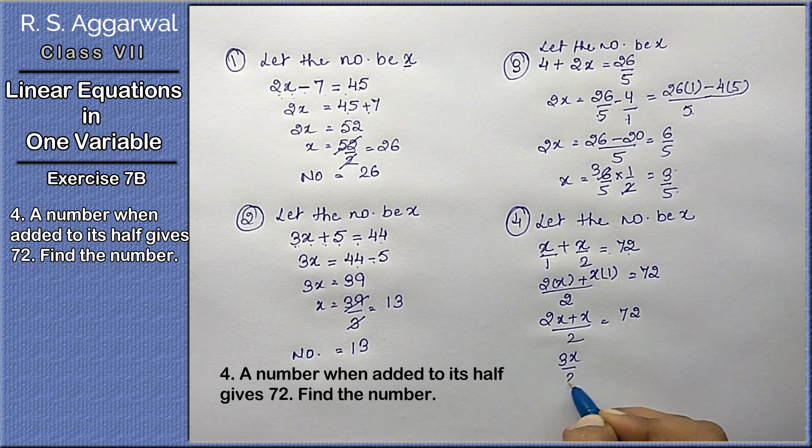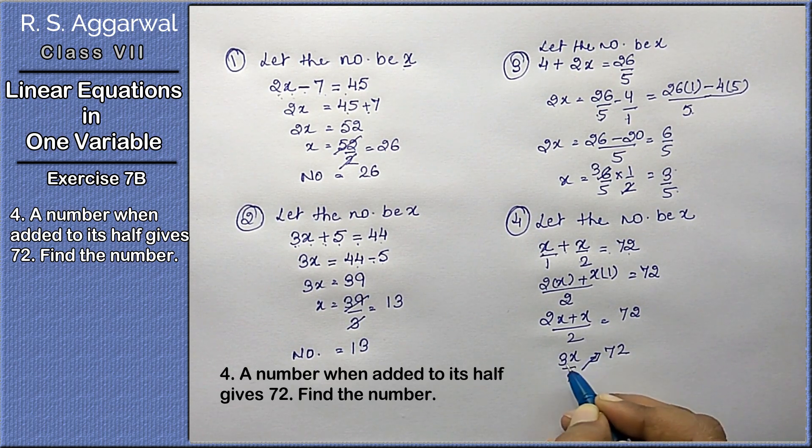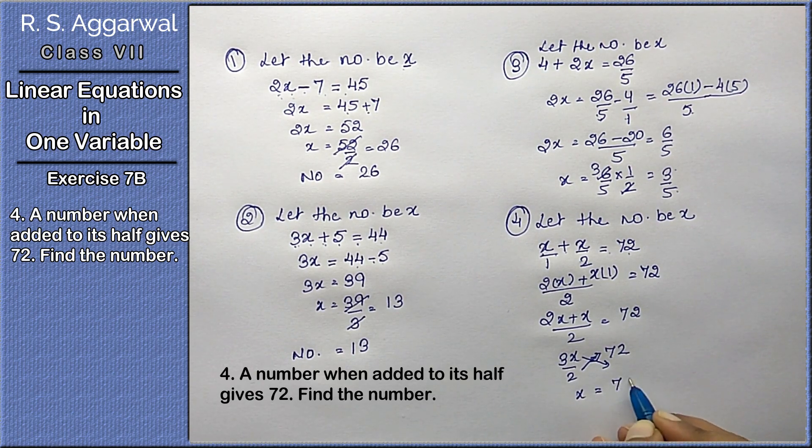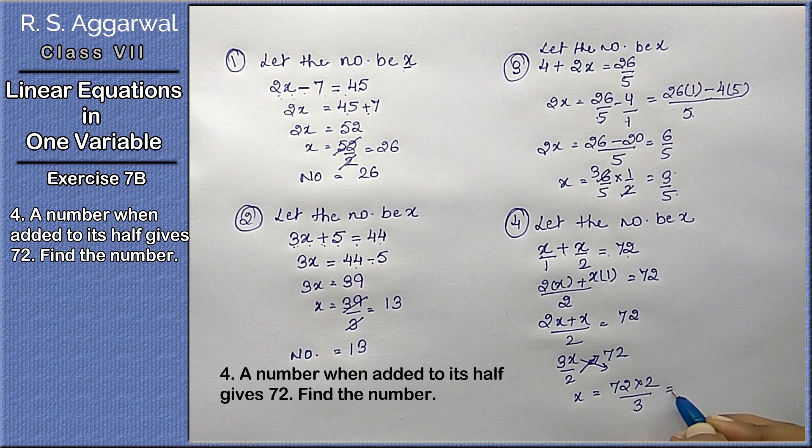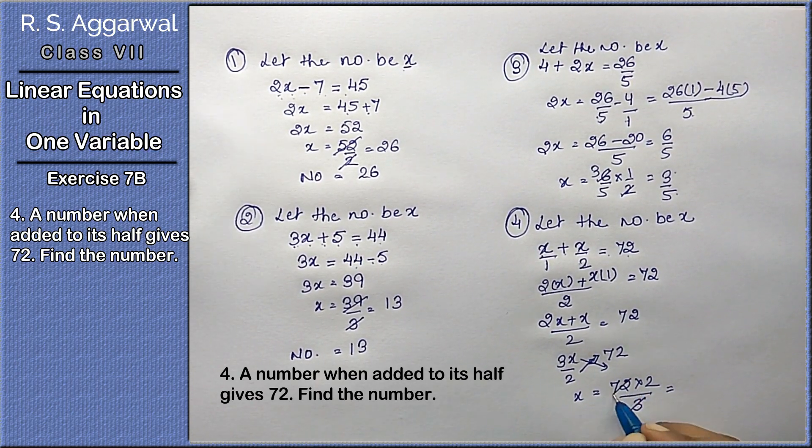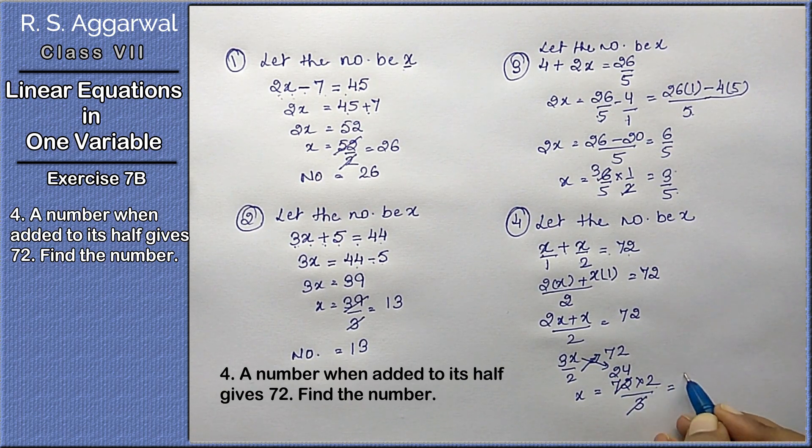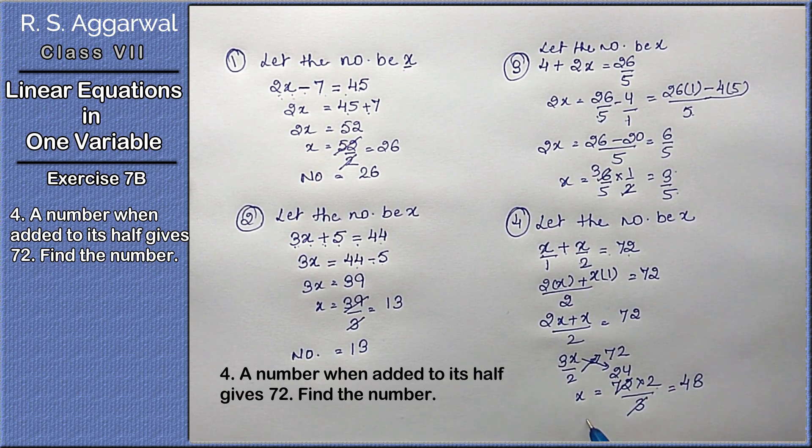So we get 2x plus x upon 2 equals 72. 3x upon 2 equals 72. This is in division, so it becomes multiplication. This is with x in multiplication, so it becomes division. x is 72 into 2 upon 3.